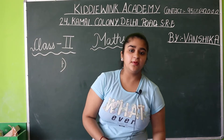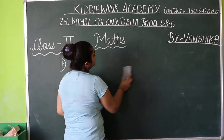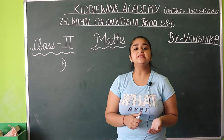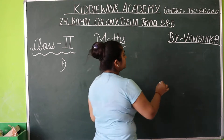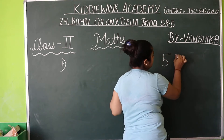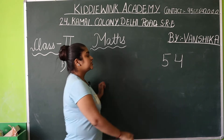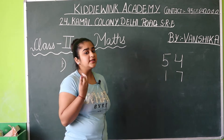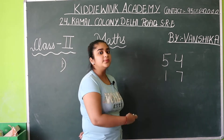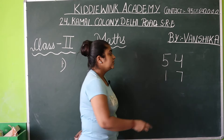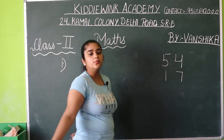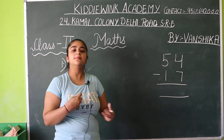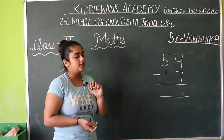Yehi bachy word problem hai, aur yehi woh kar raha hai. Company ne banaye 54 bulbs. Unhone kitne manufacture kiye? 54. Jis mein se 17 jo the, woh kharab nikal gaye. 54 bulbs company ne manufacture kiye the. Jis mein se 17 jo hain, woh defective nikali — yaani ki 17 jo hain, woh kharab nikali. Toh company ke paas aage provide karne ke liye kitne bulbs hain? 54 mein se hum 17 ko minus kar dein, subtract kar dein. Then we will come to know ki unke paas kitne bulbs hain jis mein koi defect nahi hai.